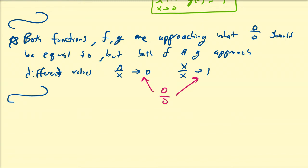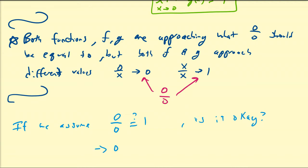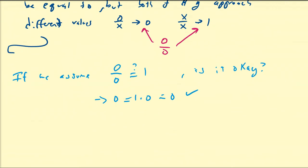If we assume zero divided by zero is equal to one, and we multiply both sides by zero, that gives us zero equals one times zero, which equals zero — that's okay. What if we assume that zero divided by zero is equal to zero? Again, multiplying both sides by zero, we get zero equals zero times zero, which is zero — that's okay too. So both are fair.